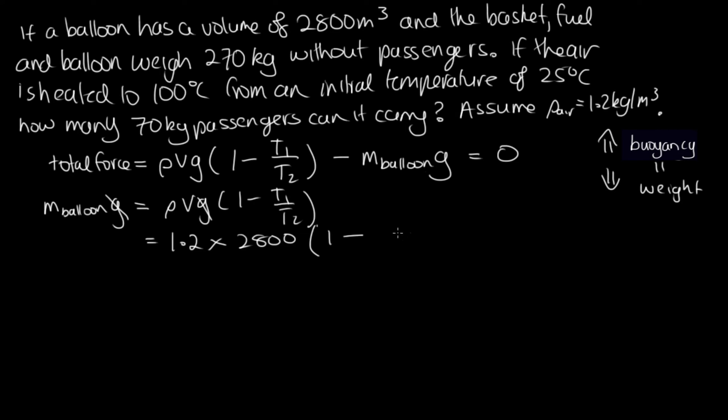Now the initial temperature is 25 degrees C. This is in Kelvin, so 25 plus 273. And the final temperature is 100 degrees C, so 100 plus 273. So we can solve this on the calculator, and we get 675.6 kilograms.